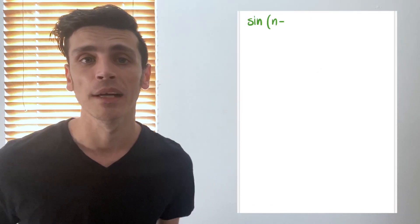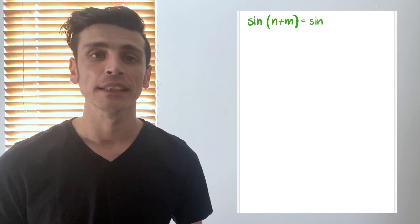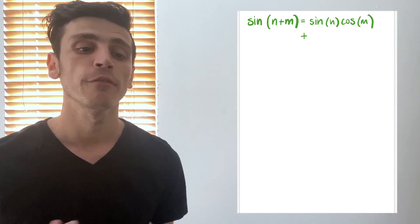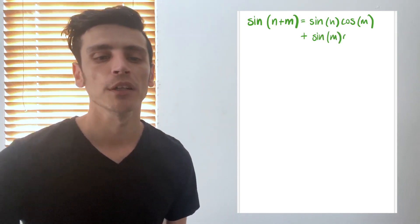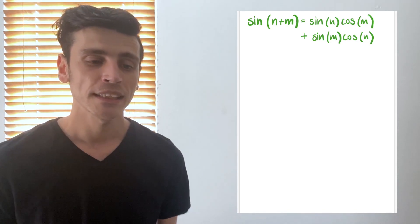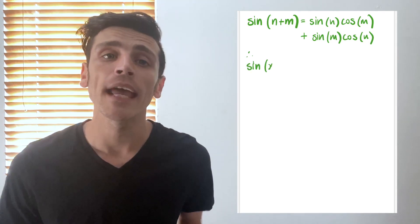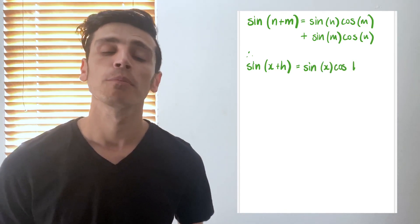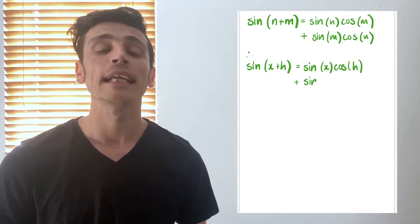Now we're going to use one of our trigonometric identities, which applies when we have sine with two additions within its angle. So if we have sine of (n+m), where n and m are any real numbers, we can expand this: sine(n+m) gives us sine(n) multiplied by cos(m) plus sine(m) multiplied by cos(n). We can use this because sine(x+h) is in the same form, so substituting: sine(x+h) equals sine(x)·cos(h) plus sine(h)·cos(x). Now we plug all this back into our formula.